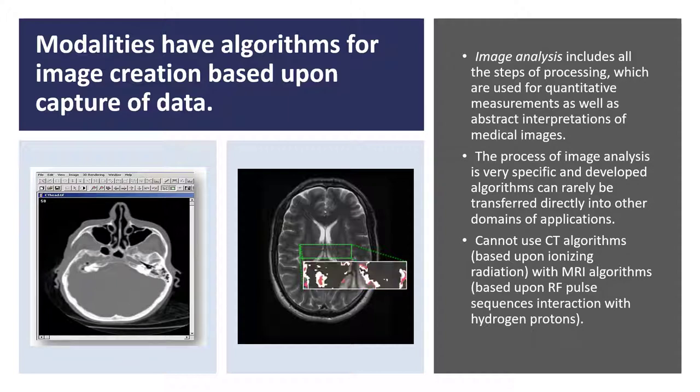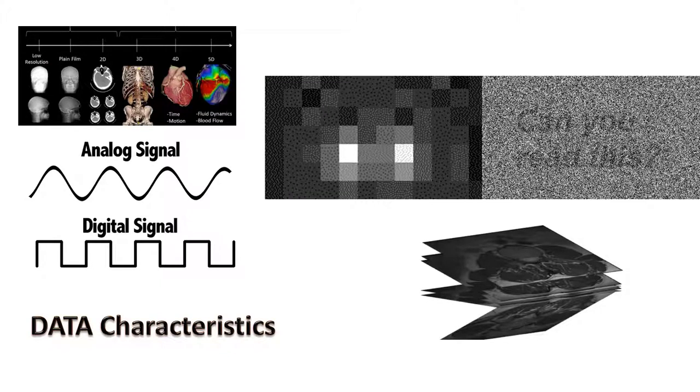For instance, CT uses ionizing radiation algorithms, whereas MRI algorithms are based upon RF pulses. Each modality produces unique analog signals or continuous signals that need to be digitized.